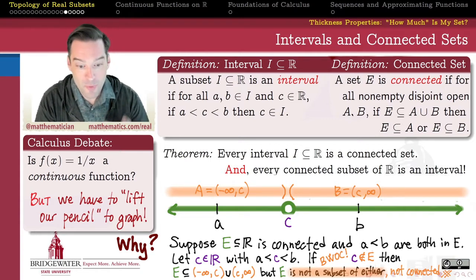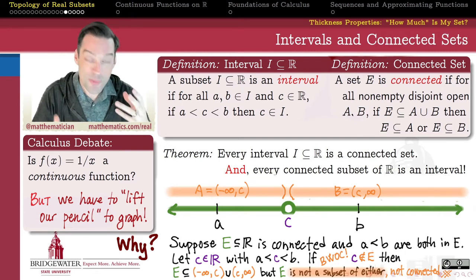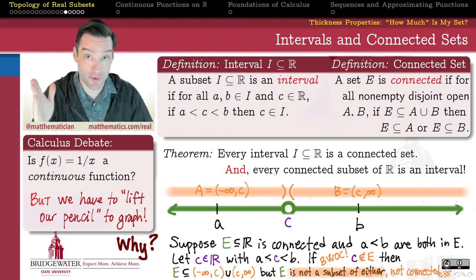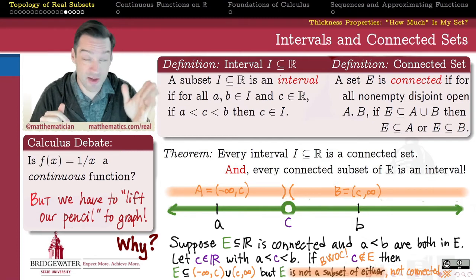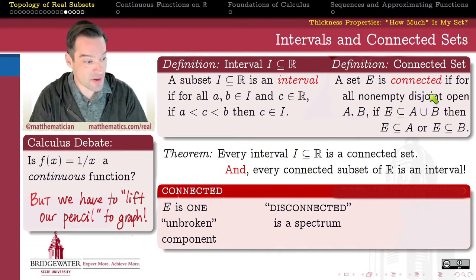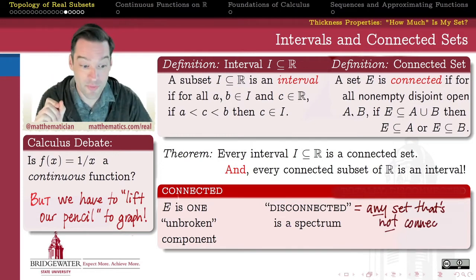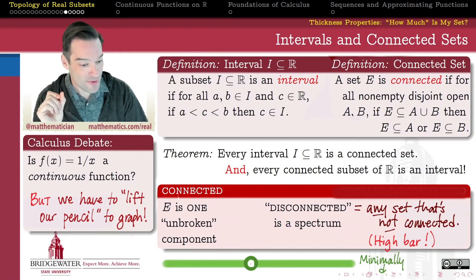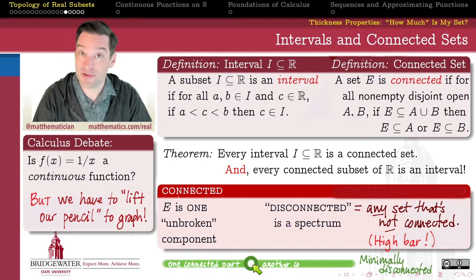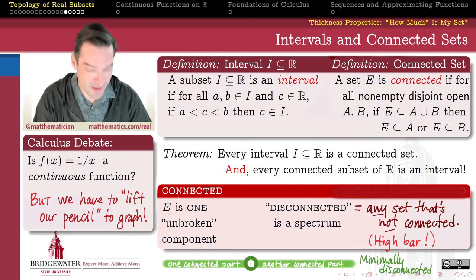Connectedness exists on a spectrum, like many of our topological notions. A few videos ago, when talking about open and closed sets, we reasoned that openness and closedness exist on a spectrum — open sets contain none of their boundary points, and closed sets contain all of them. Connectedness works the same way. On one end of the connectedness spectrum are the connected sets — those that contain just a single unbroken component. But if we delete a single real number from the real line, that's a disconnected set, though only minimally disconnected. If we put this point back in and fill in the hole, our set becomes connected again — so it's very close to being connected, but it's not actually connected.